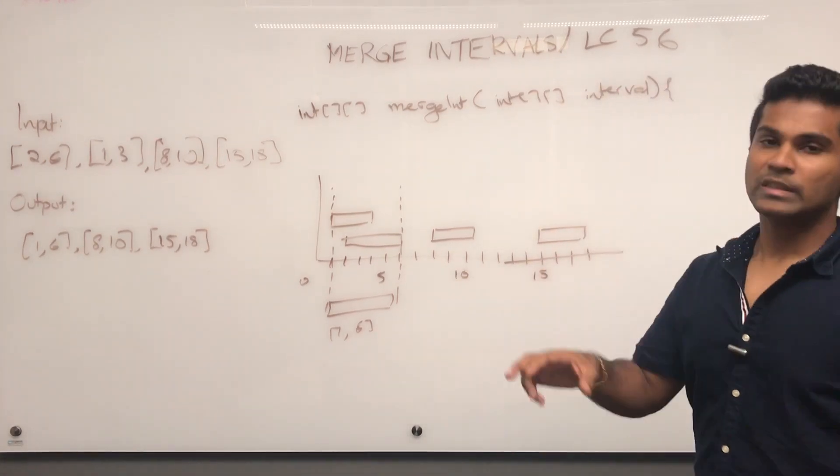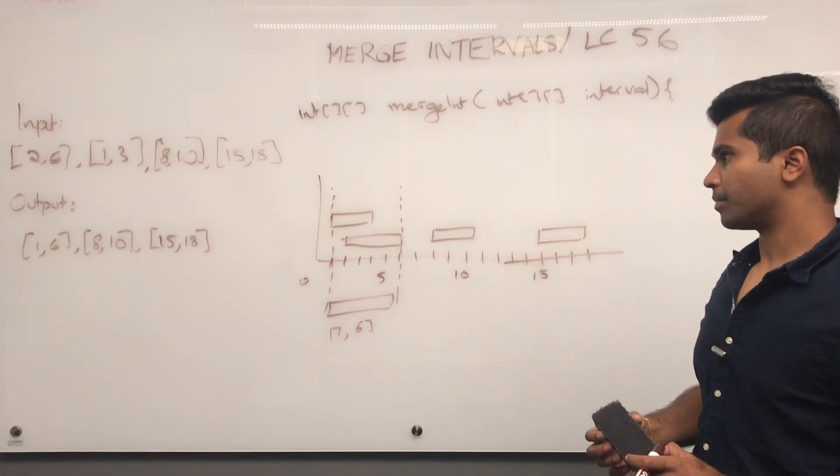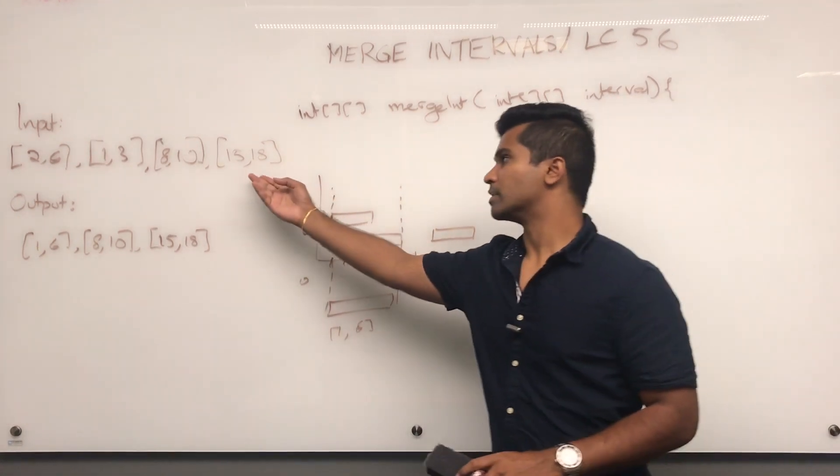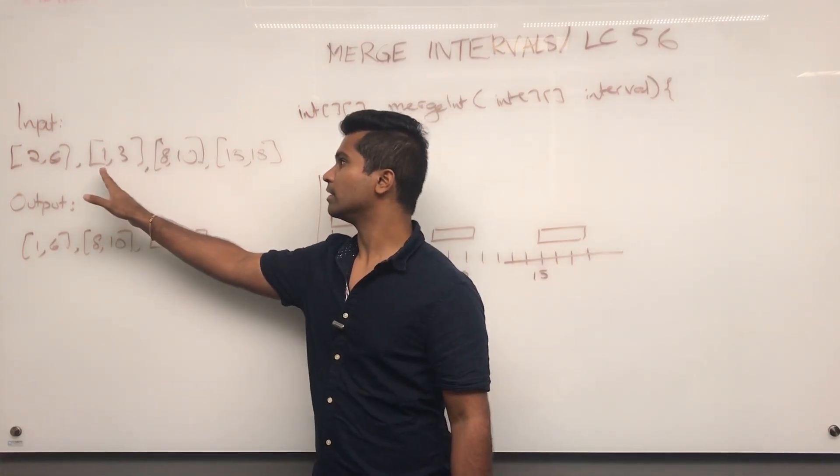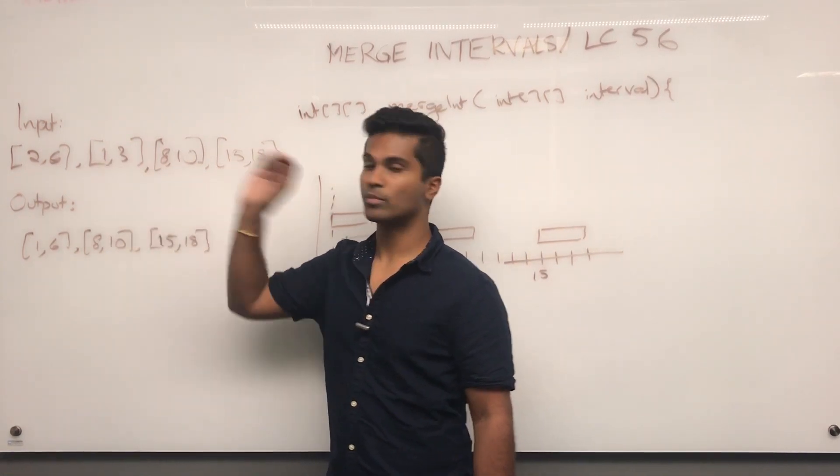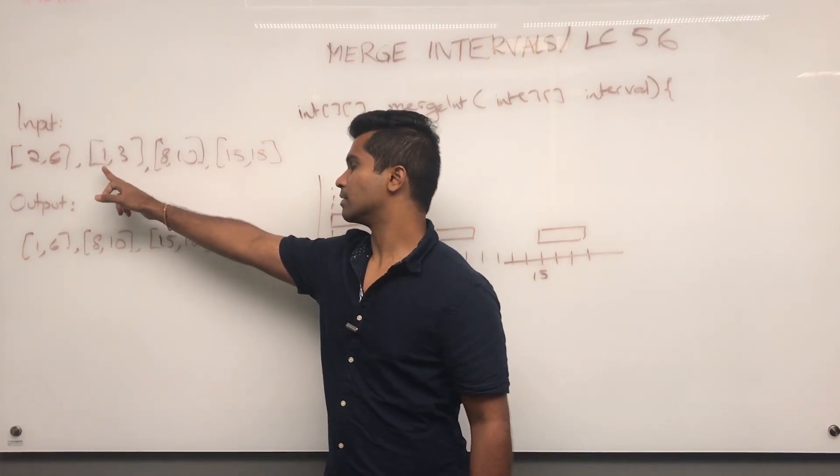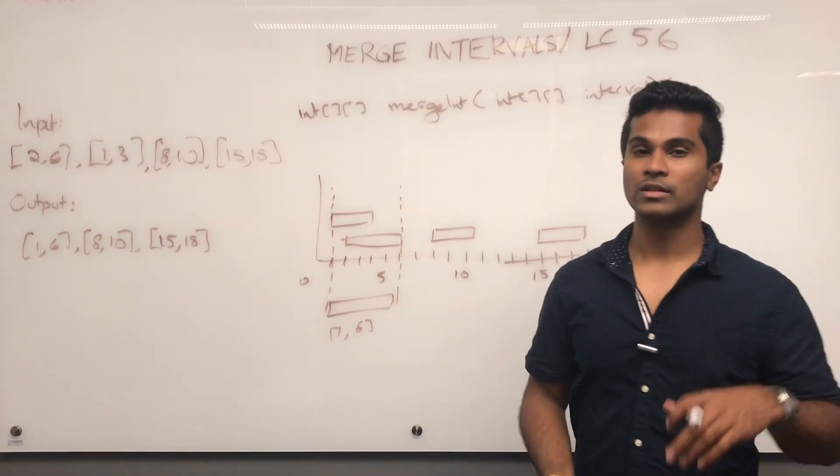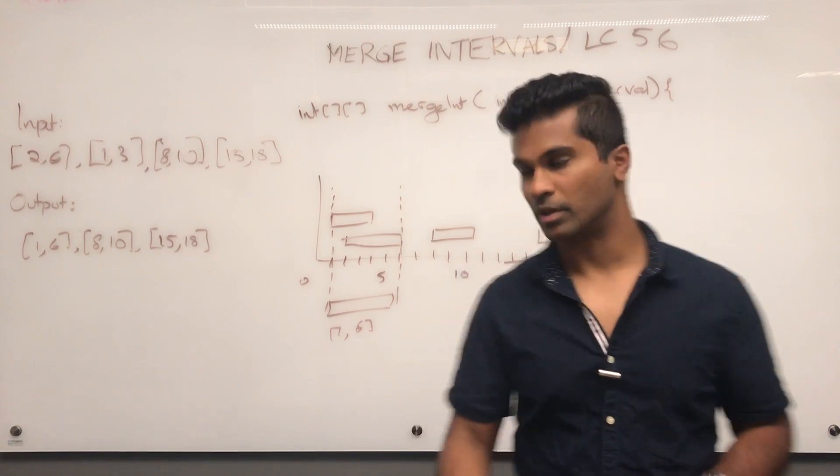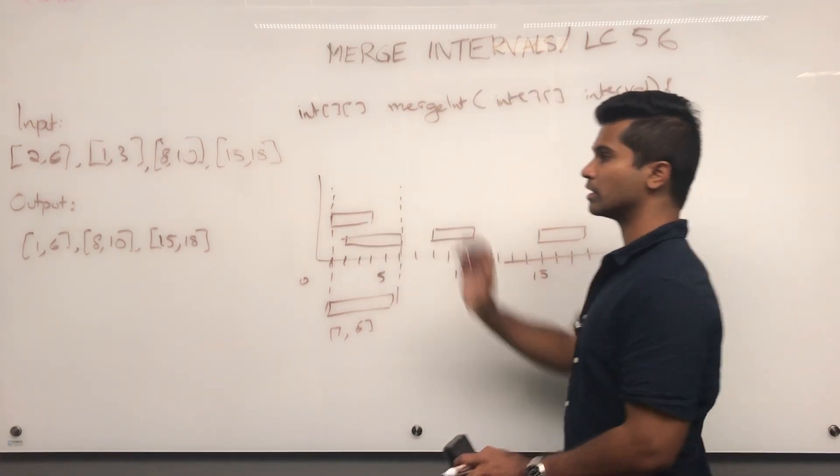The first thing to notice is no matter how the input is given, when we actually draw on the number line, the pair which has the leading smallest number as the left number is always going to come first. This is the intuition behind why we sort it. We have to sort the input first.